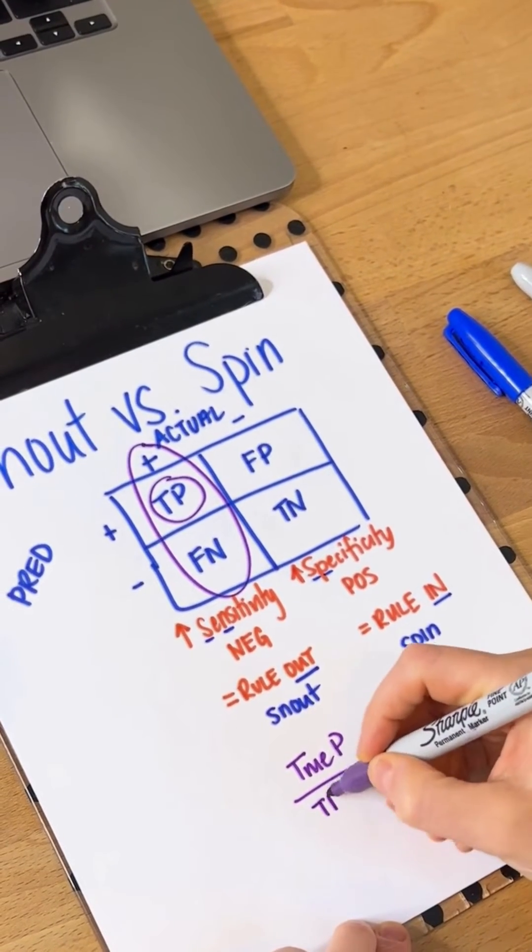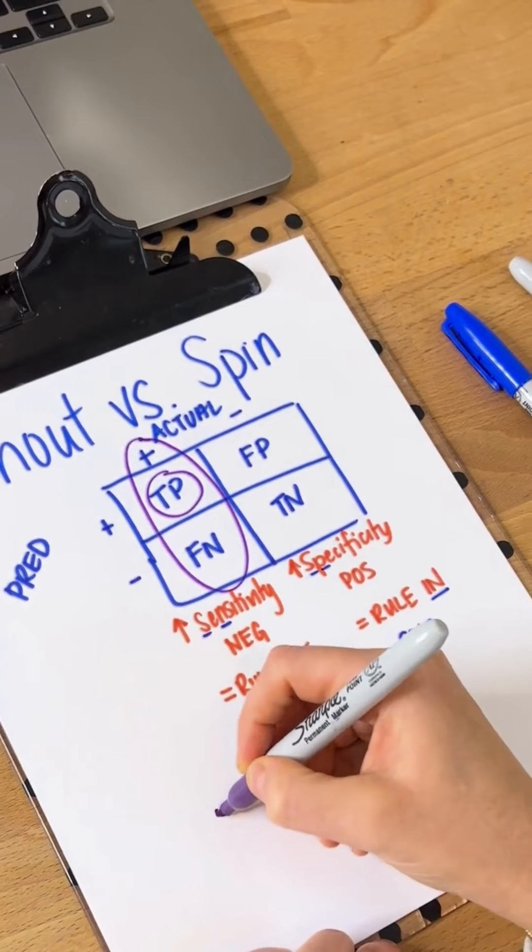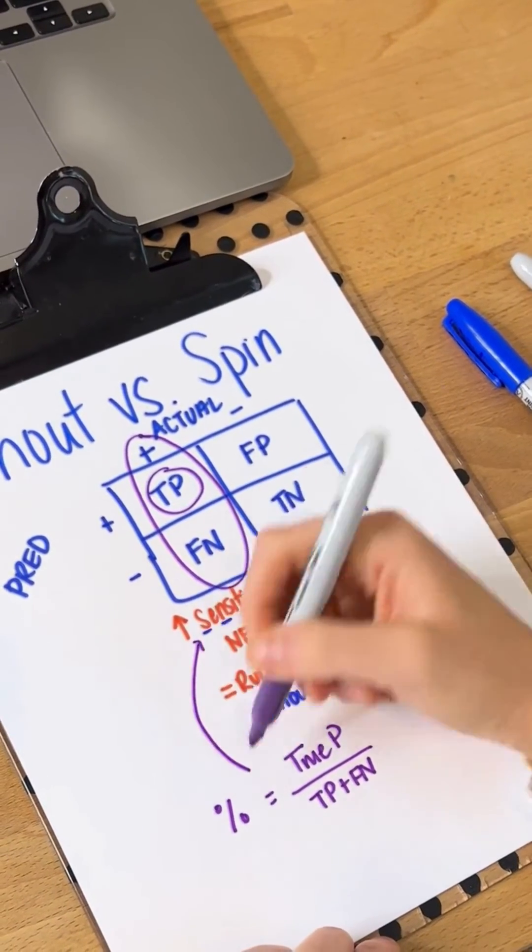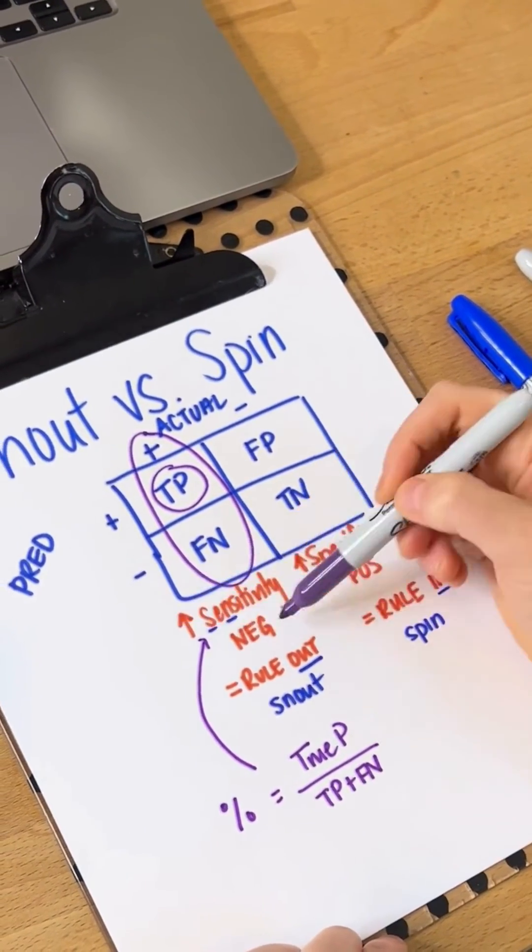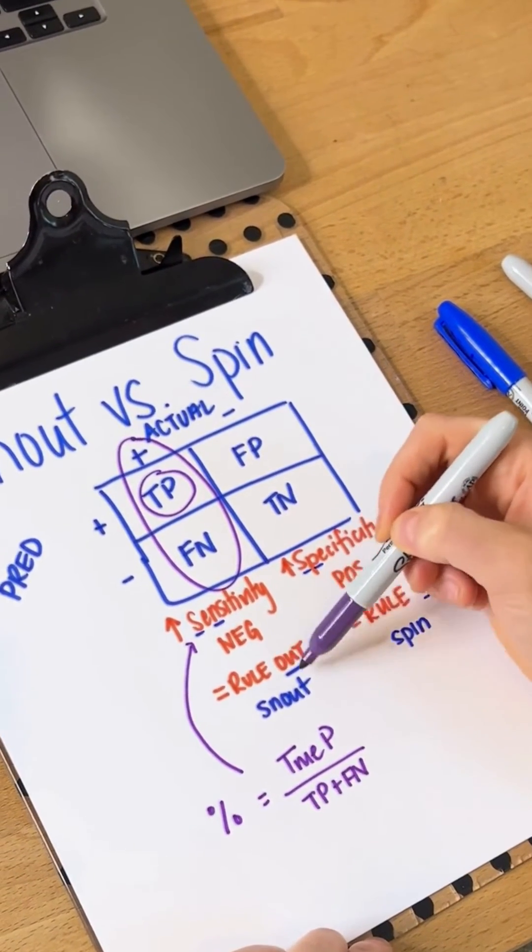So that would be our true positives and false negatives, and that would give us our sensitivity percentage. So again, if this is a higher amount and they have a negative test, this means that it has a strong ability to rule out.